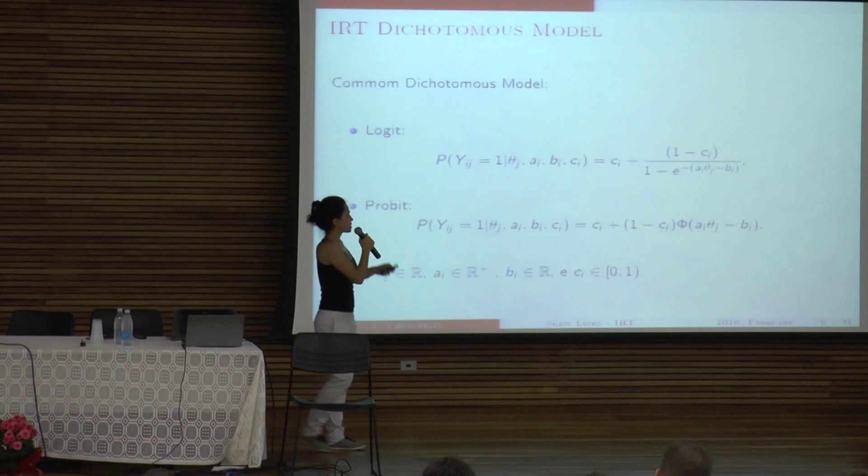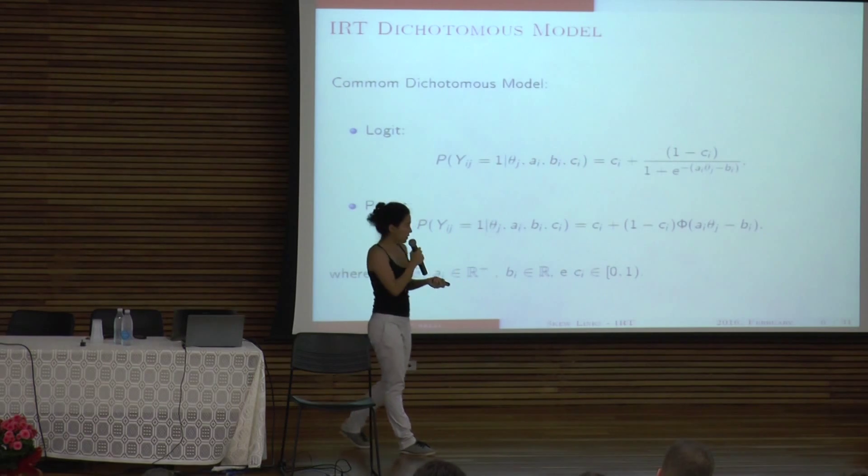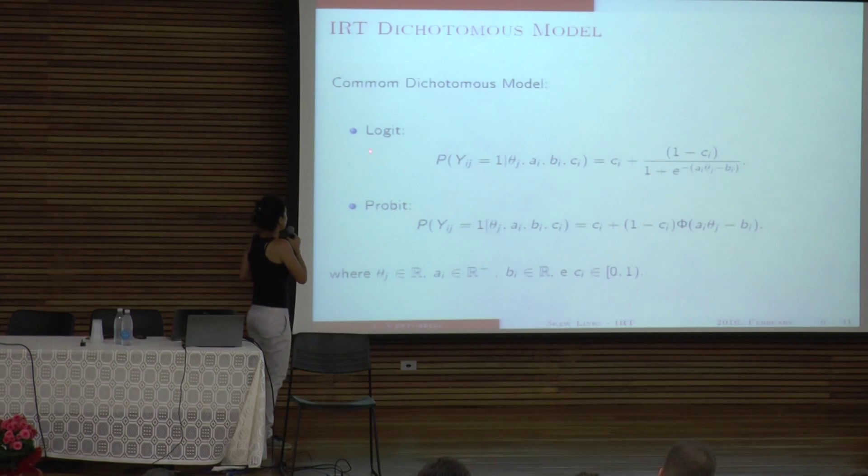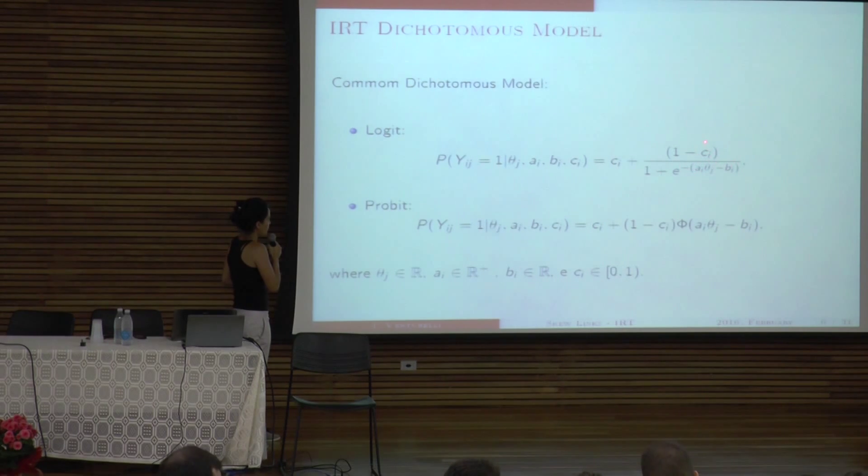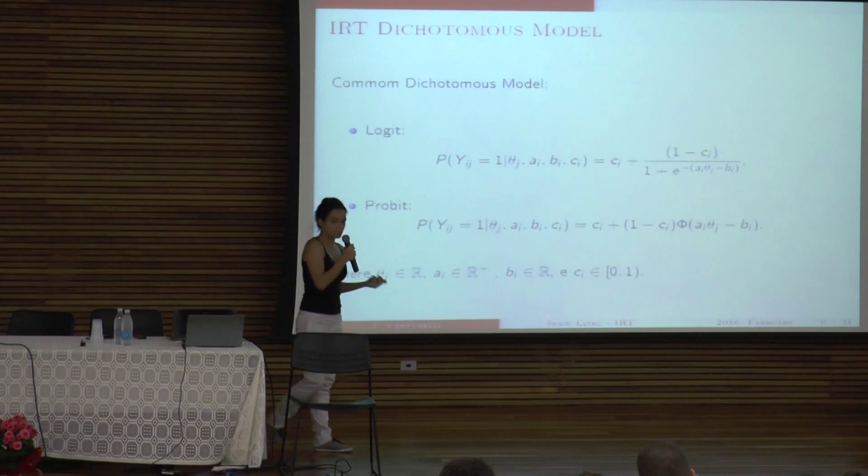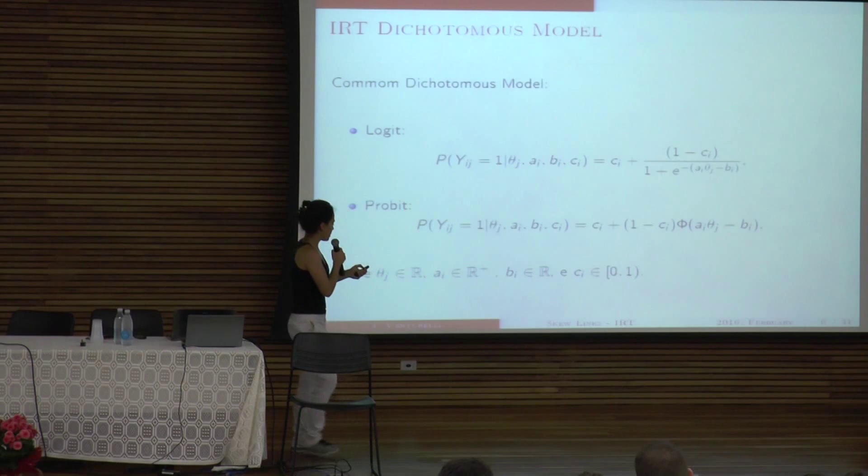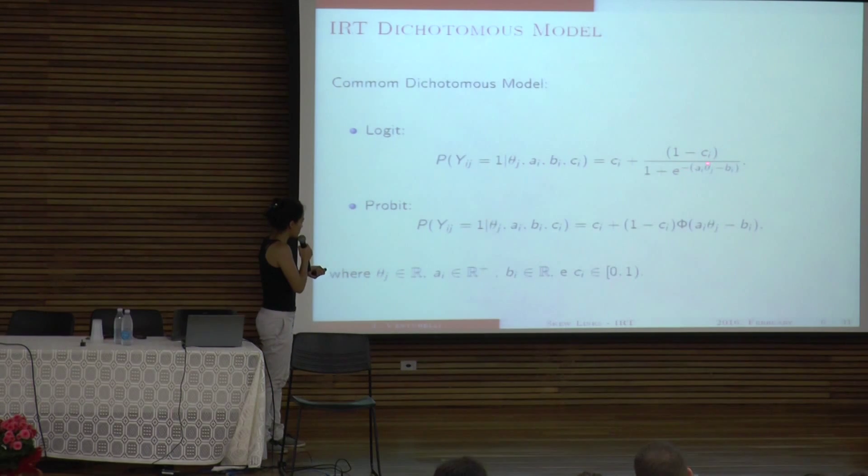So the function that gives me that probability, that's for a binary item. It's either this one, a logit one, or a probit one. And these are the A, B, and C are items parameters. And the theta, I don't know if that's the right way to say it, but theta is the subject's ability.